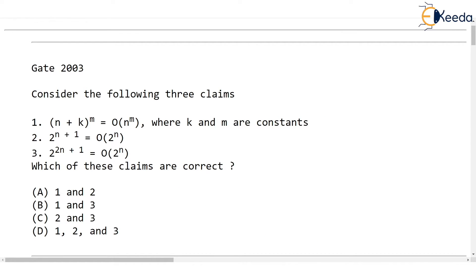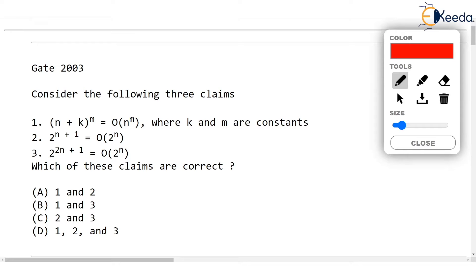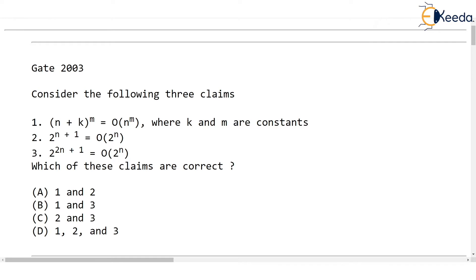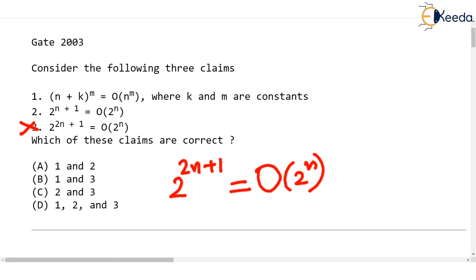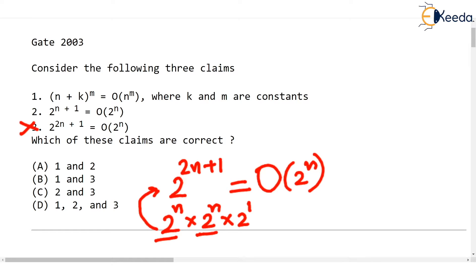Now starts the fun part — the interesting part is claim 3. In claim 3, what is given is 2^(2n+1). Watch that 2n+1 — the entire thing is in the exponent. Can it be written as O(2^n)? No way, this claim is wrong. Because the left hand side can be written as 2^n × 2^n × 2^1. Of course the exponents get added, giving 2^(2n+1). Here there are two big exponential terms: 2^n × 2^n.